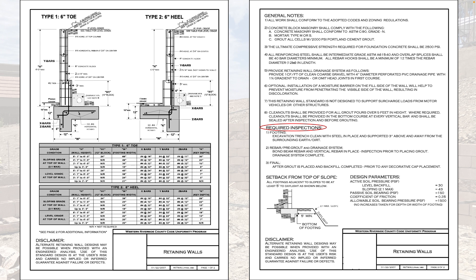The main thing to pay attention to are the required inspections — inspections are key in construction. There are three called out here. First, the footing inspection: before you pour, the inspector checks the depth, rebar spacing, and rebar size to confirm it's installed per plans, then approves the pour. Second, the rebar and pre-grout inspection of the actual wall: before filling the CMU block cells, the inspector verifies rebar placement. Third, the final inspection once everything is placed and backfilled.